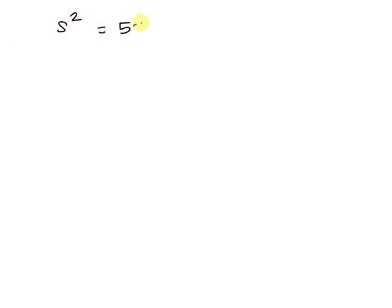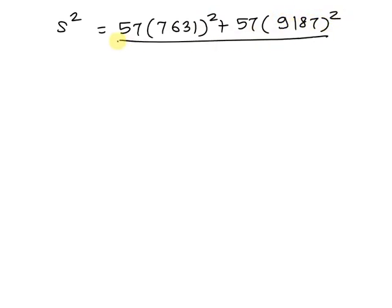s² equals 57 times 7,631 squared plus 57 times 9,187 squared, divided by 57 plus 57 minus 2.